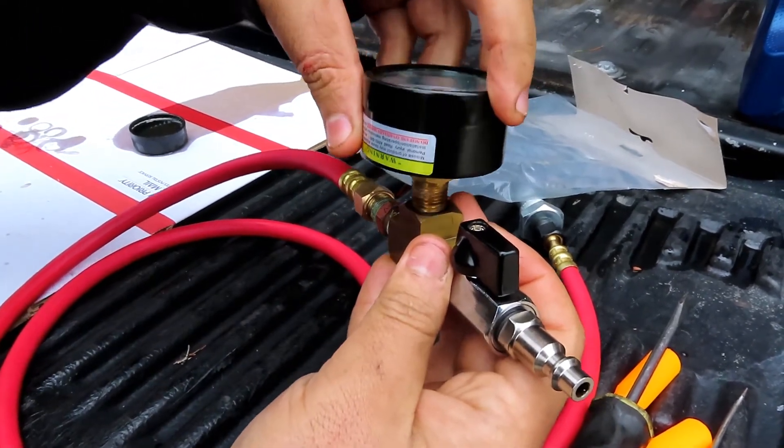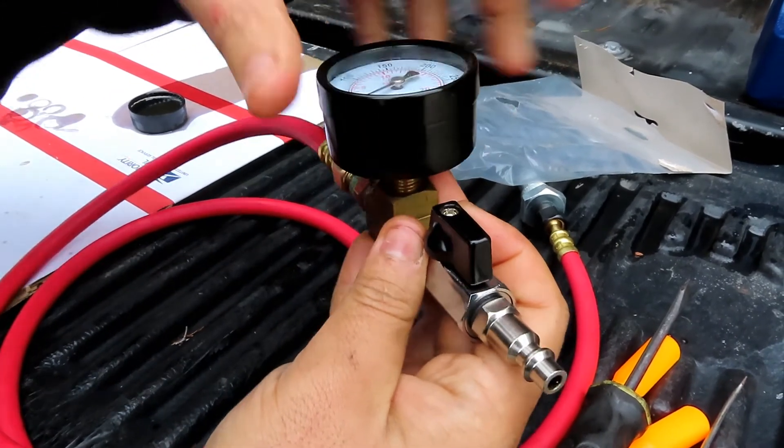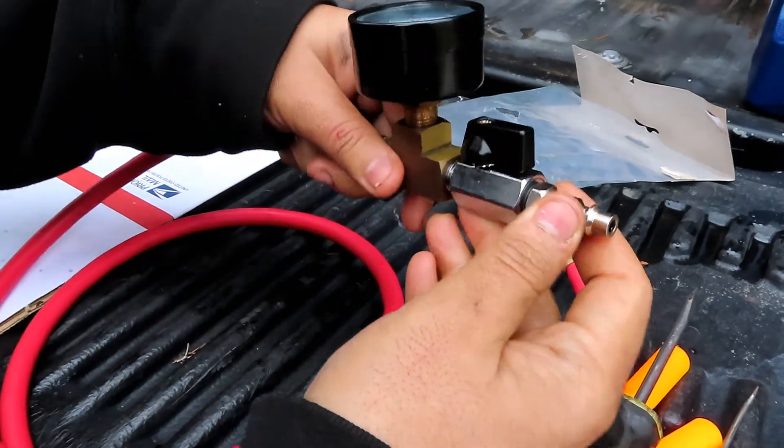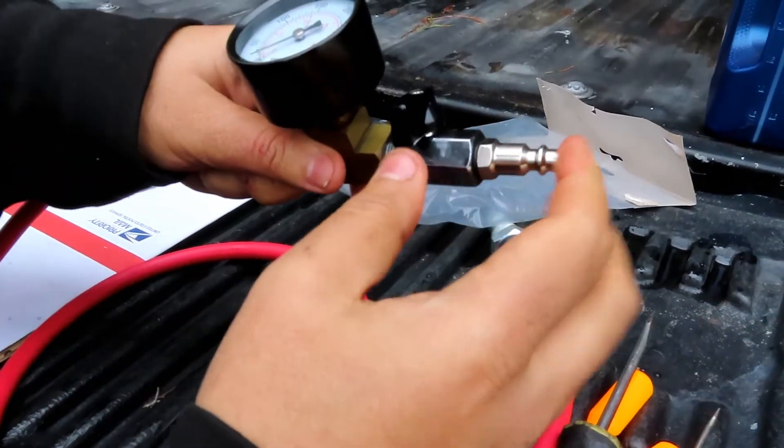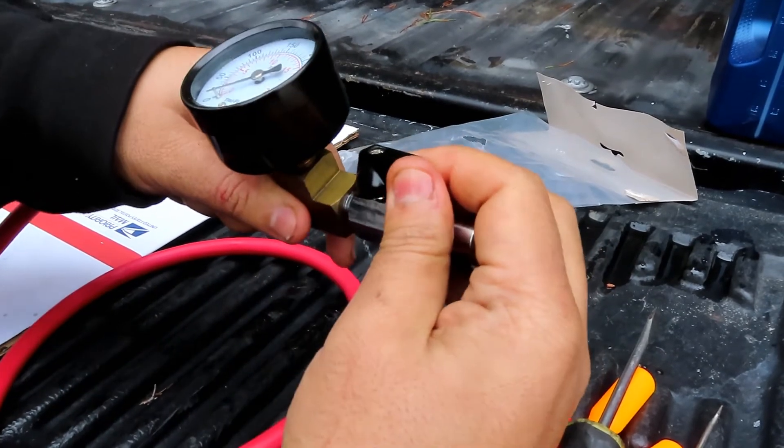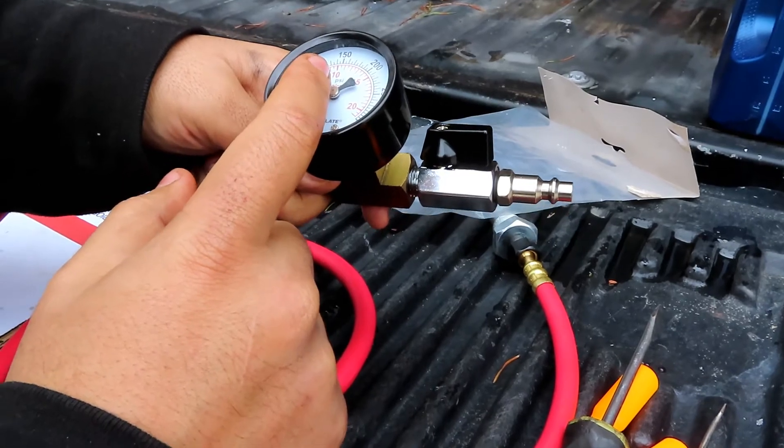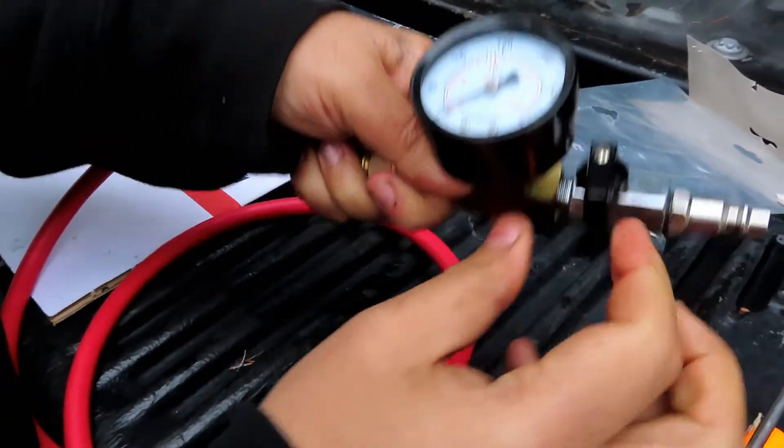Now all you do is grab your gauge. Standard NPT gauge, you get these from Harbor Freight anywhere. I went with this kind, this is a cheap gauge, was like five or six dollars. You'd have it closed, connect the compressor, open it up, pressurize your system, let's say like 120 PSI for me or 130 for me, and then I'll close the valve.